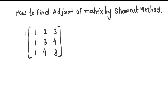Here we can see this is the matrix A which has the elements 1, 2, 3, 1, 3, 4, 1, 4, 3. So now I want to find out the adjoint of this matrix.